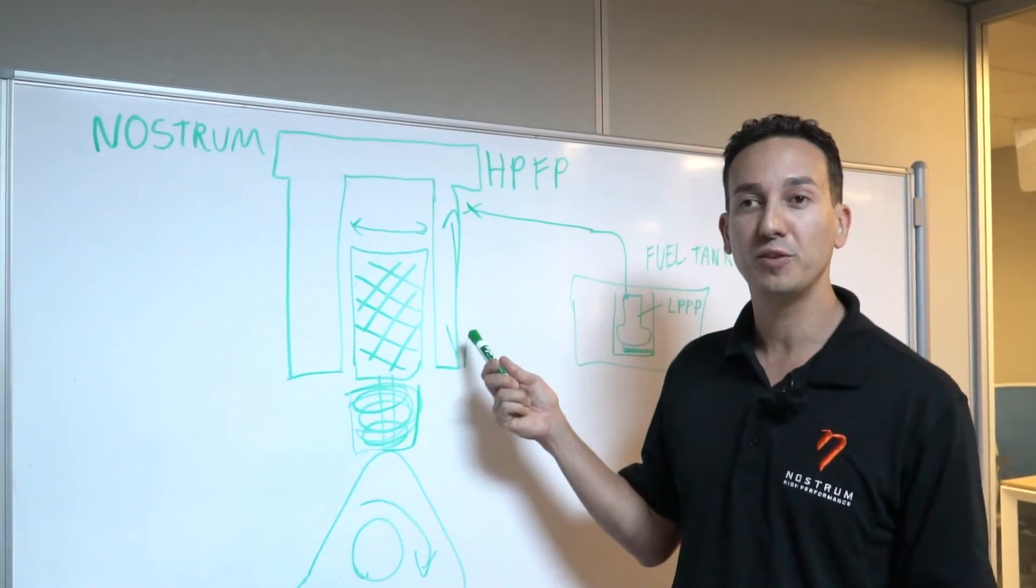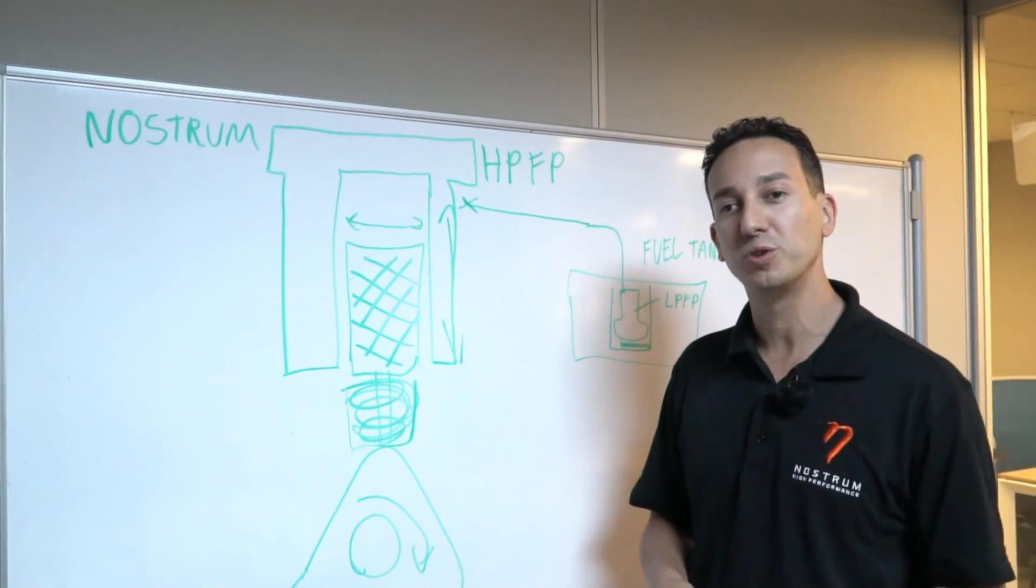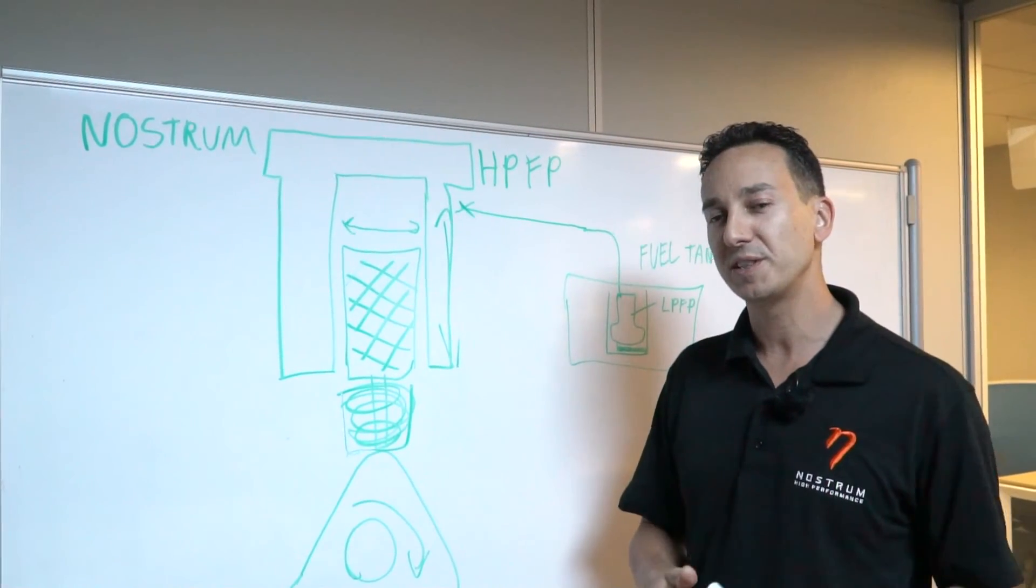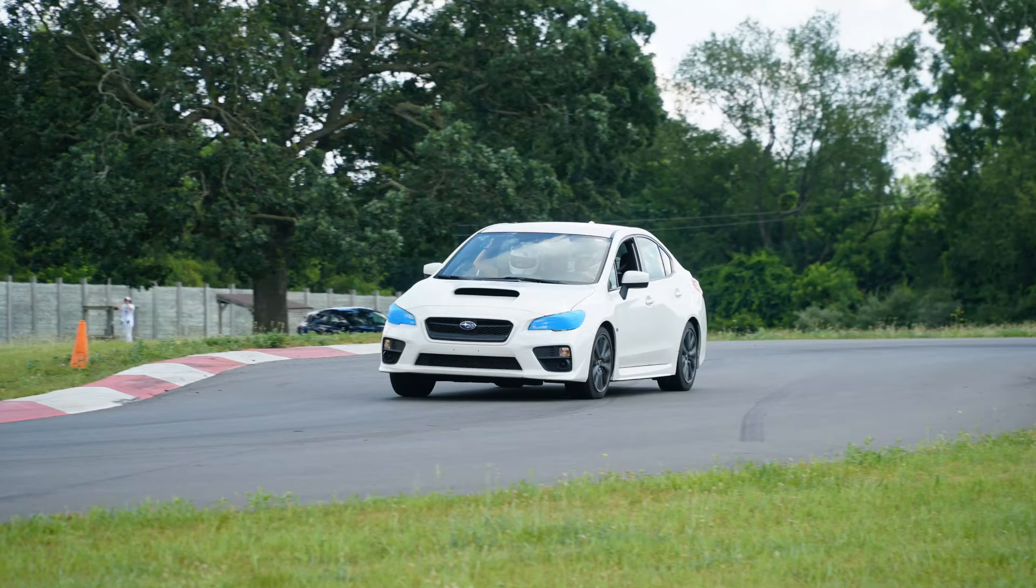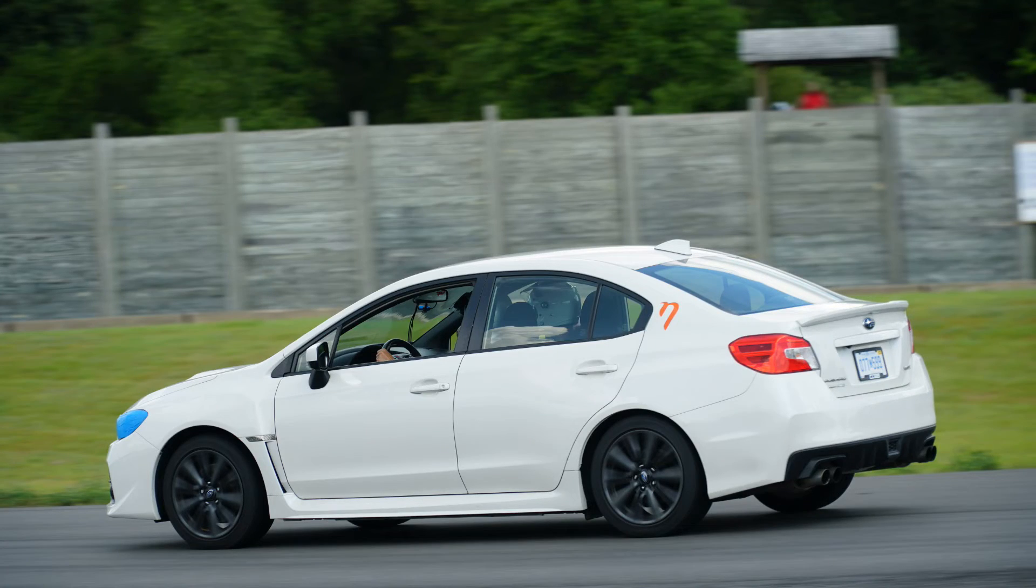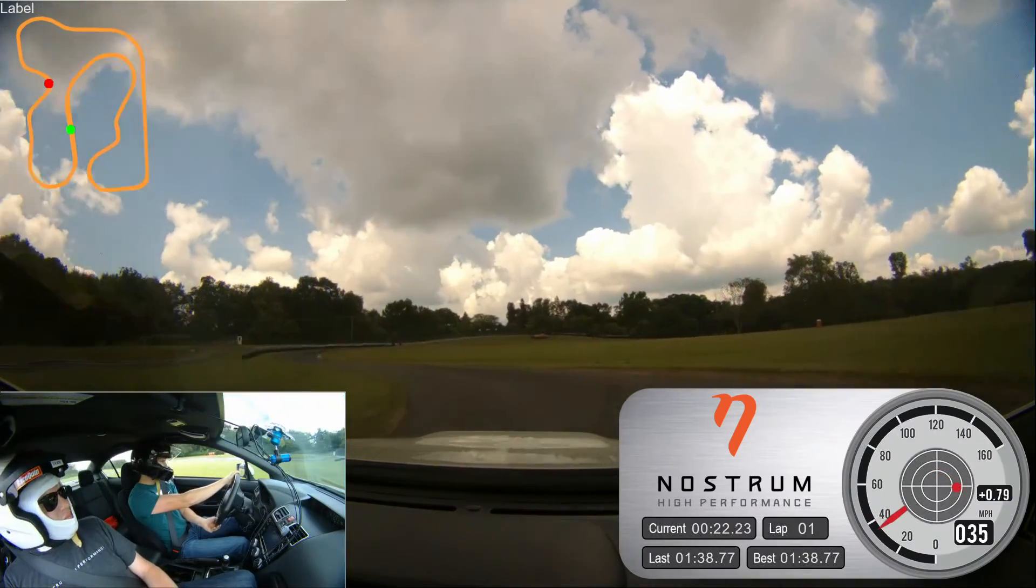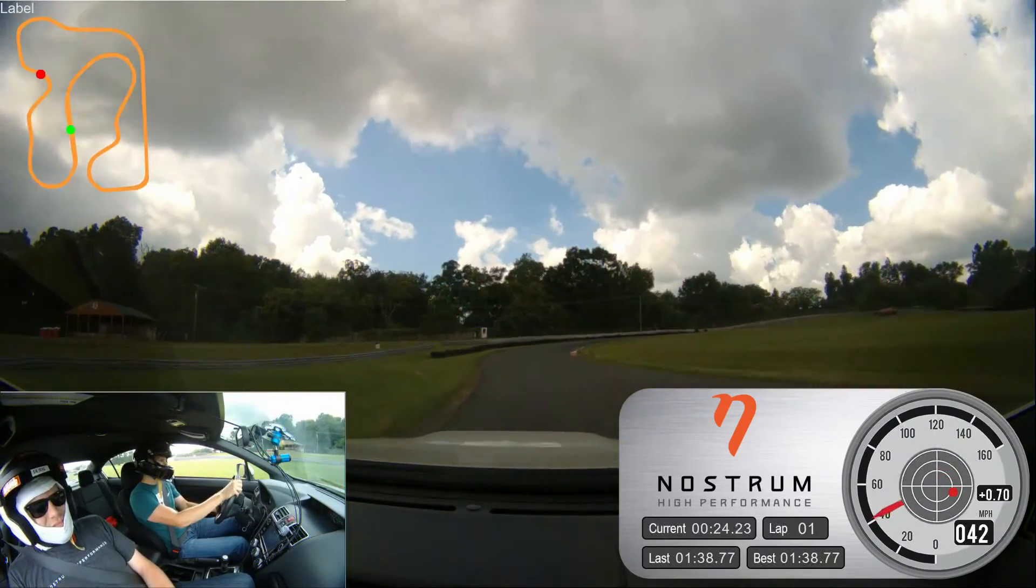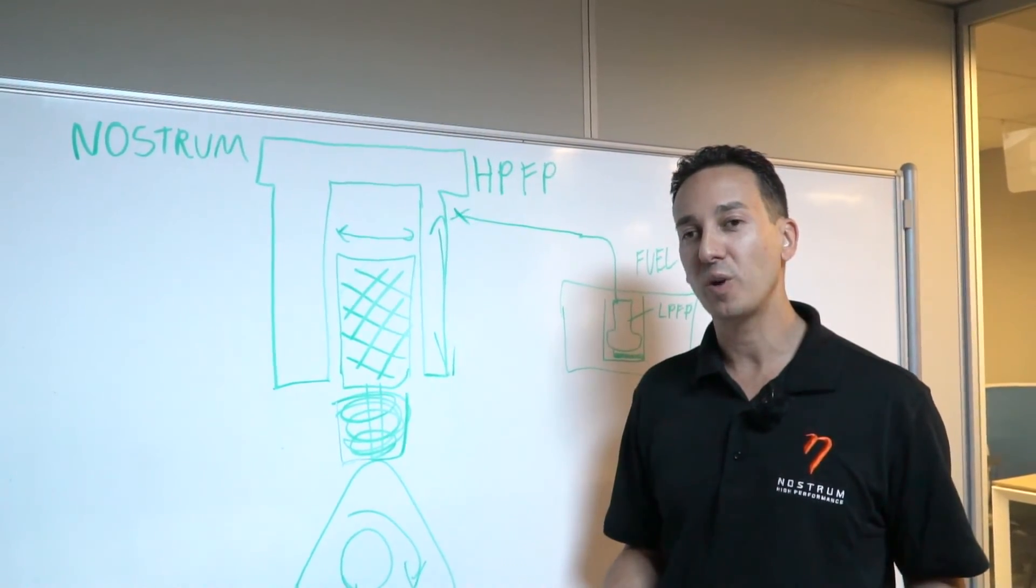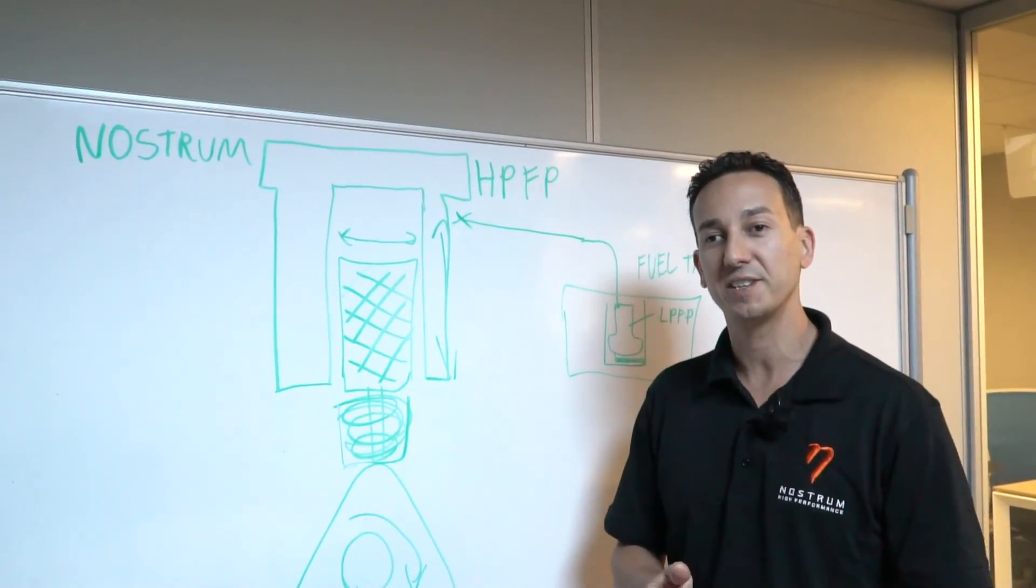And with the high pressure fuel pump upgrade from Nostrum, you're able to do that all the way to about 600 wheel horsepower. We feel this is a great upgrade. We feel strongly enough about it that we have one in our own personal 2016 WRX, which is doing great. We hope you like the product. If you have any questions, please don't hesitate to reach out and ask us about it.